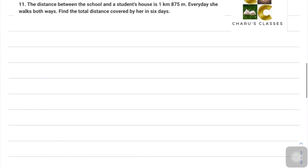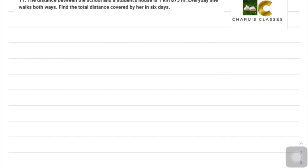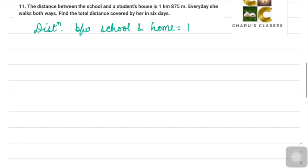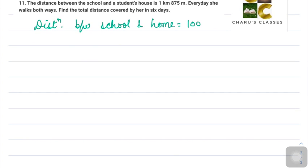Question number 11: The distance between the school and the student's house is 1 kilometer 875 meters. Every day she walks both ways. Find the total distance covered by her in 6 days. Distance between school and home is 1 kilometer 875 meters. 1 kilometer is 1000 meters, so 1000 plus 875, this is 1875 meters.